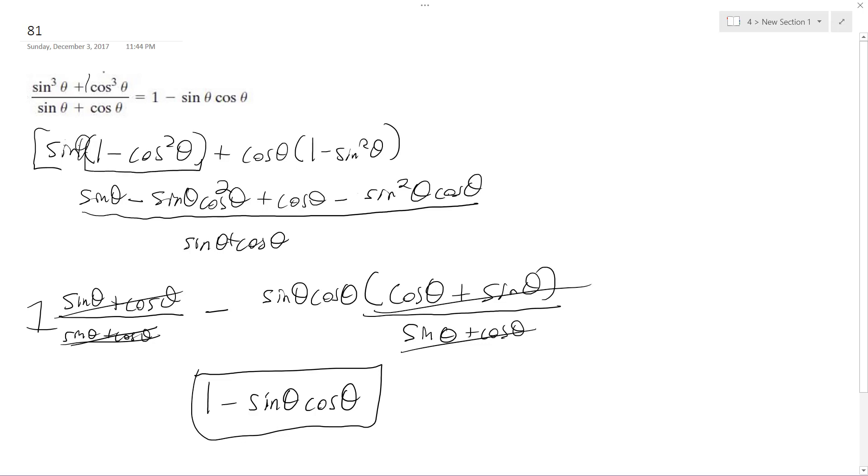And I did a similar thing for the cosine cubed theta. I took out the cosine and converted the cosine squared to one minus sine squared theta. And then I distributed the sine and everything out like that.